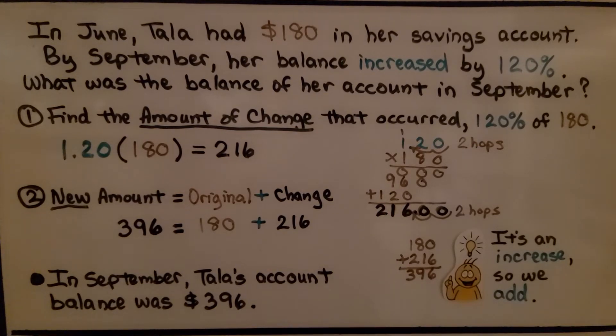In June, Tala had $180 in her savings account. By September, her balance increased by 120%. What was the balance of her account in September?